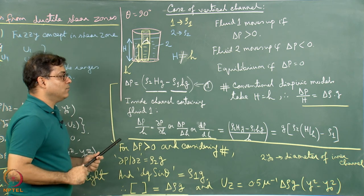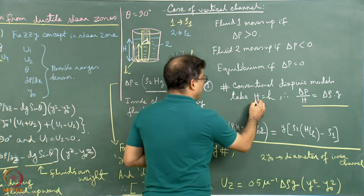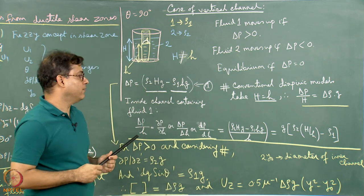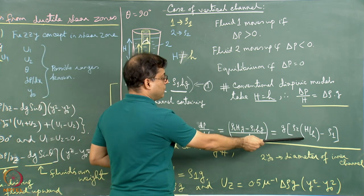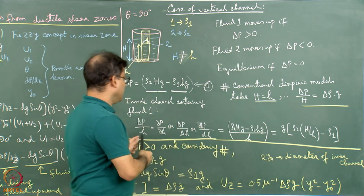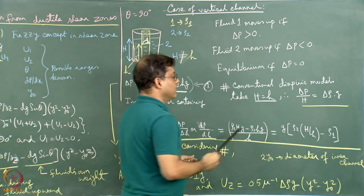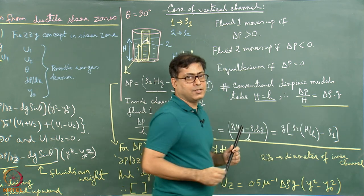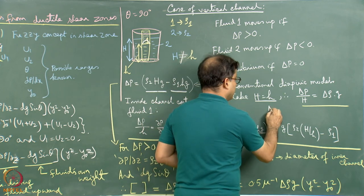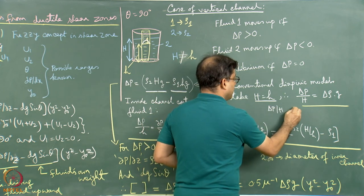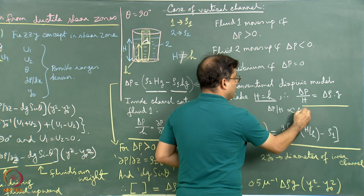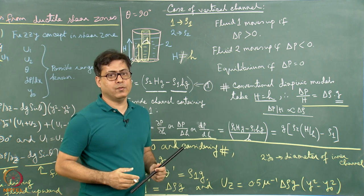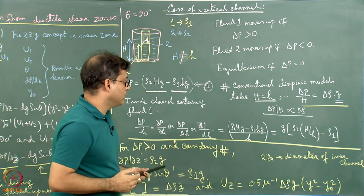Note that conventionally, diapyric models consider H equal to small h to simplify things. If that is the case, the delta p/h expression equals the density difference multiplied by the acceleration due to gravity. So delta p/h is proportional to delta rho, since the acceleration due to gravity has remained nearly the same over the last many thousands of years.